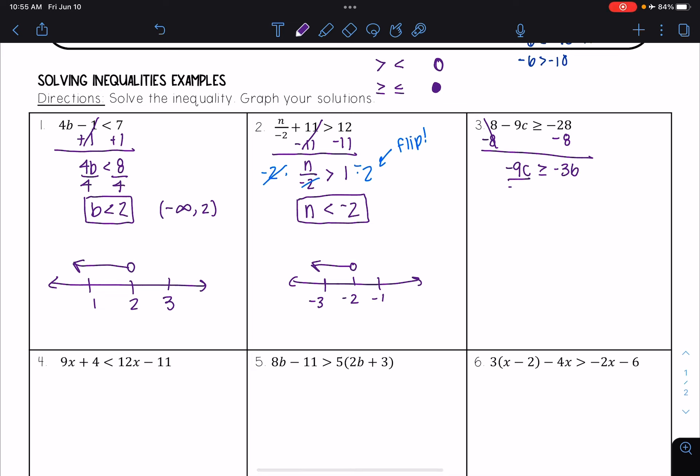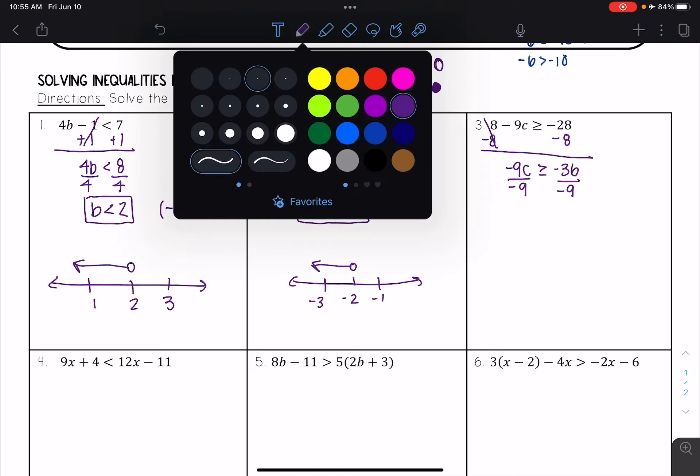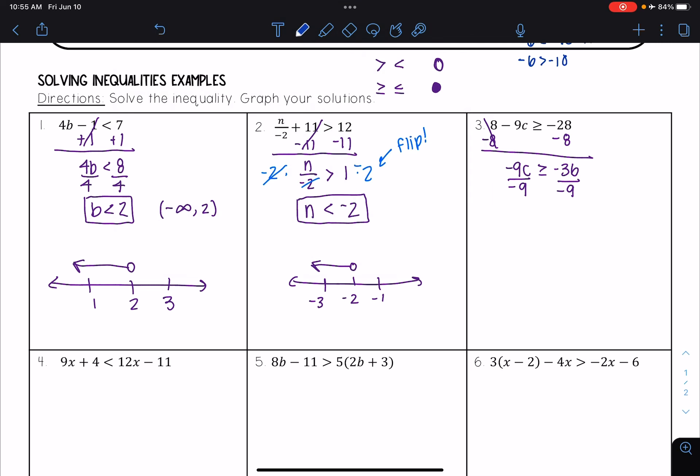And then I need to divide both sides by negative 9. Now here, I'm also dividing by a negative number, so that means I need to flip the inequality. And so I get that c is less than or equal to 4.